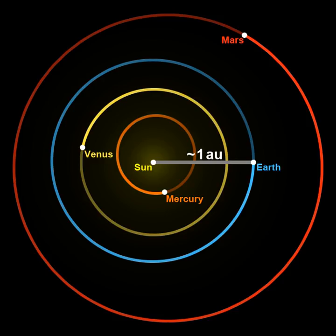The astronomical unit is a unit of length, roughly the distance from Earth to the Sun. However, that distance varies as Earth orbits the Sun, from a maximum to a minimum and back again once a year.